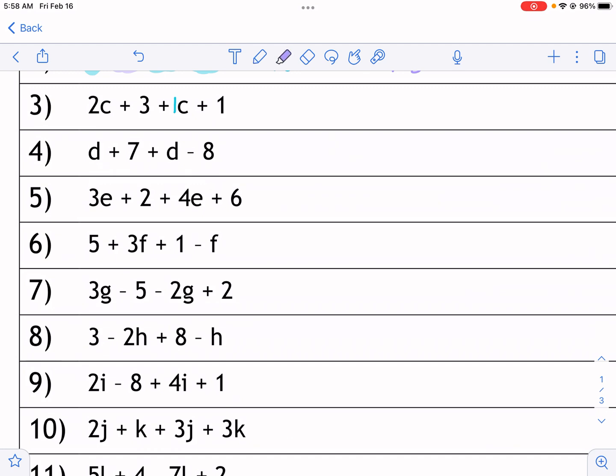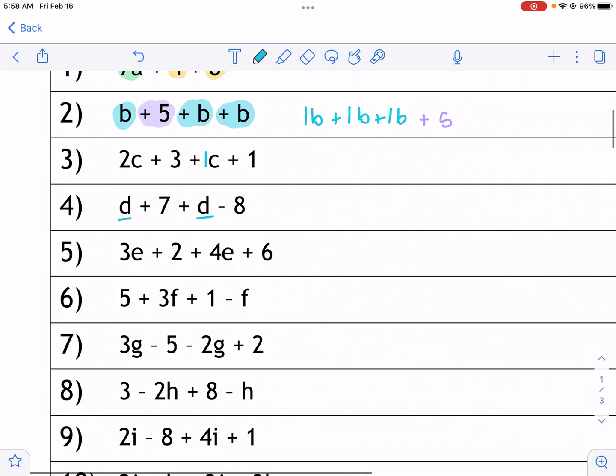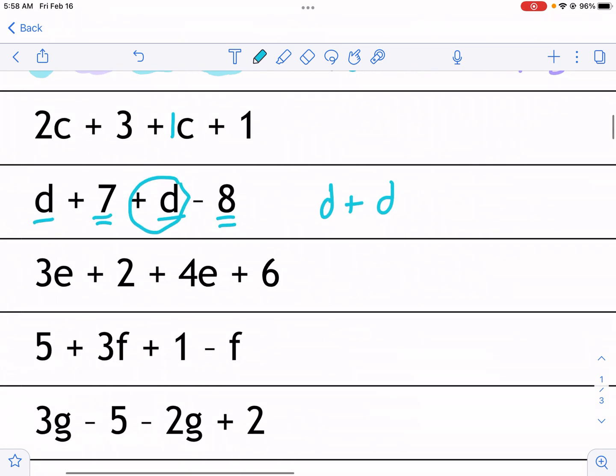So number four, this one appears easier on the surface than it actually is. But I sometimes like to underline. If you don't have a highlighter handy, it's easy to just underline. And then maybe use some sort of differentiating underline for the constants. So I have d plus d—do not forget the sign in front of each variable. And then I have plus seven. That was my double underline. There's a plus in front of that. And then minus eight. Very important that you keep that minus in front of it; it needs to travel with it.